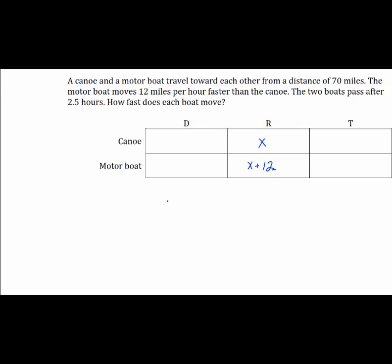Next we look at the statement that the two boats pass after 2.5 hours. This tells us that both boats are moving for a full 2.5 hours since they both start at the same time and they pass after that 2.5 hours. So in this problem it makes sense to use 2.5 for the time for both entries.